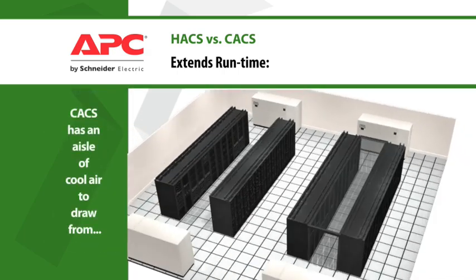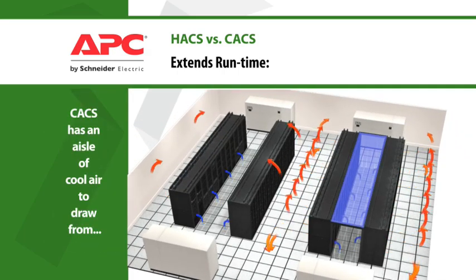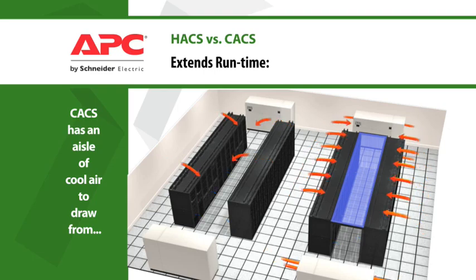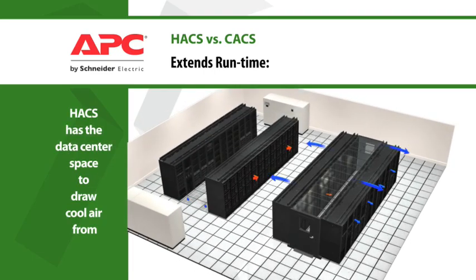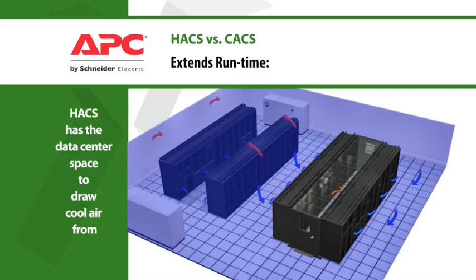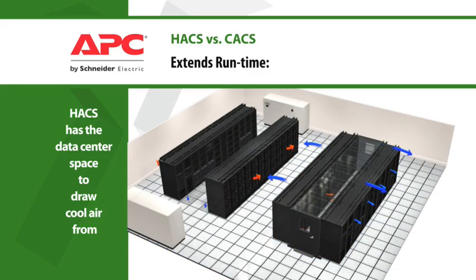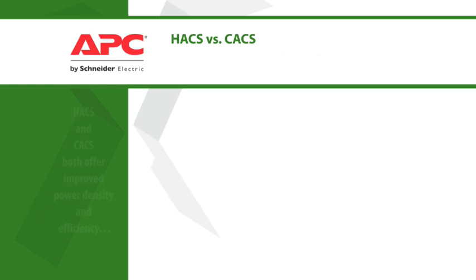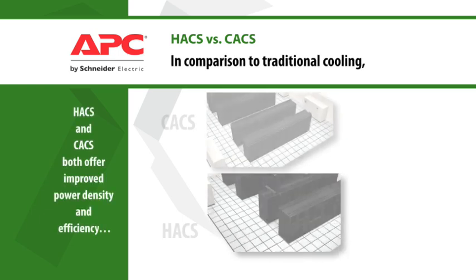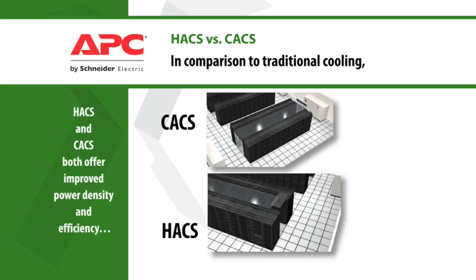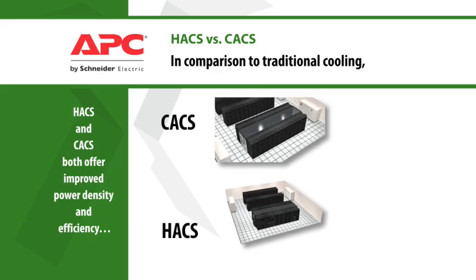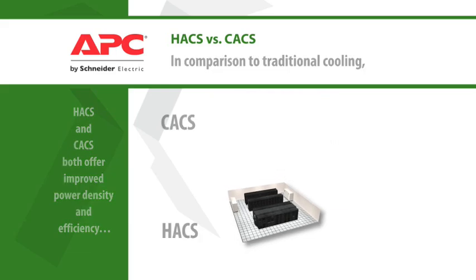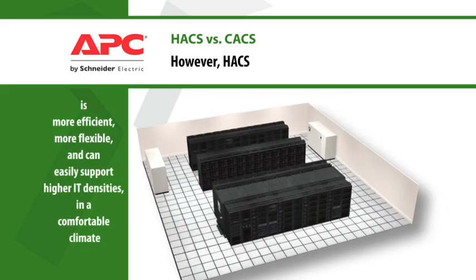A significant advantage that the hot aisle system has over the cold aisle system is the ability to extend run time. In the event of a cooling failure, run time is decreased with CACS because the cold air used to cool the IT equipment is drawn only from the center aisle. In HACS, the equipment will draw the cold air from the entire data center, resulting in fewer cooling failures and extended run times.